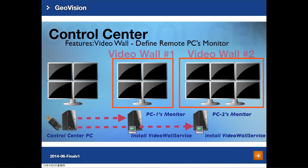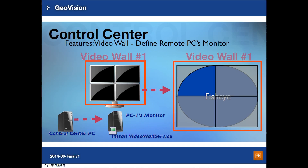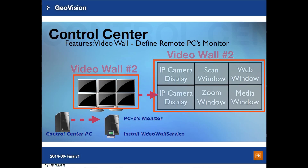After introducing video wall content, we are going to introduce layout. Control Center defines the layout and content for each remote computer. After the video wall service is connected, you will know each remote computer's monitor combination, so you can design the correct layout for each computer. Here is an example of a four-monitor display using a fisheye camera with cross monitor display to see the details of the camera image. The second example is a six-monitor layout: two monitors for IP camera live view, and the remaining monitors with a combination of scan window, web window, zoom window, and media window.